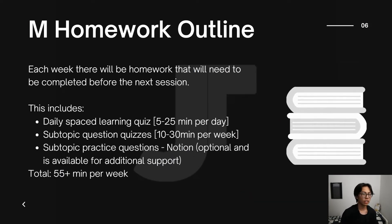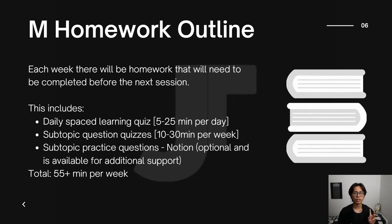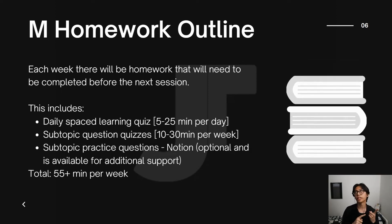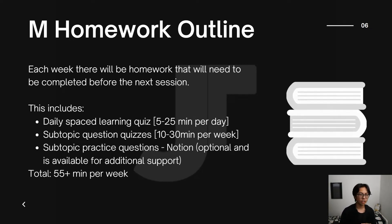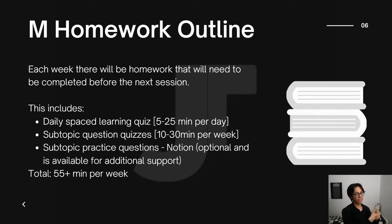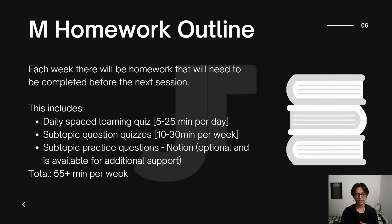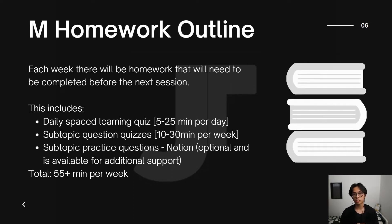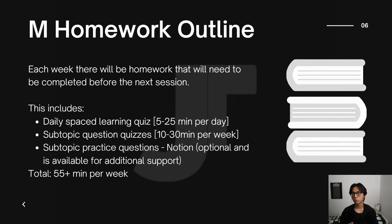So the mathematics homework outline. Each week I will be setting homework that will need to be completed before the next class. There are two key things which I need students to complete each week. Number one is the daily spaced learning quiz — this can be anywhere between 5 to 25 minutes depending on the intensity which a student has selected. Number two, the subtopic question quizzes. We will do one in class, but I would also like students to try it again sometime in the week before the next class. There are also more practice questions on Notion for additional support, and roughly this is about 55 plus minutes per week.